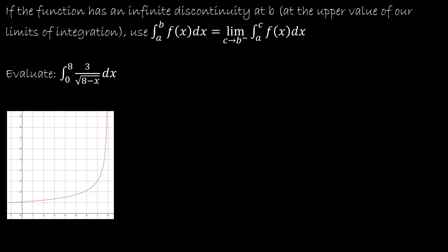For our first example, let's take a look at what happens when our function has an infinite discontinuity at B, or at the upper limit of integration. Looking at this graph, we can see that there would be an asymptote at x equals 8, and 8 happens to be one of our limits of integration — that's why this is an improper integral.